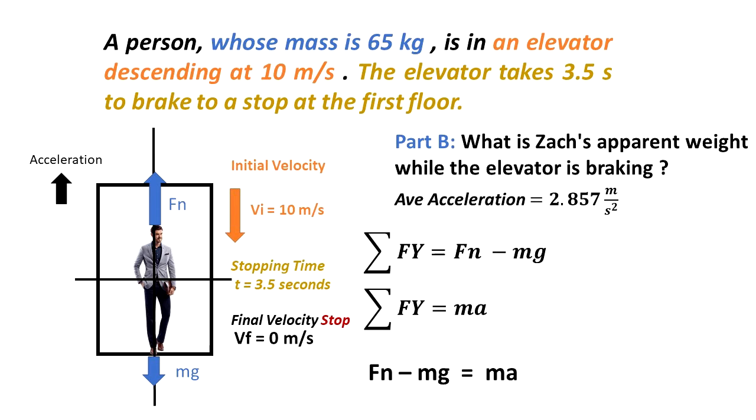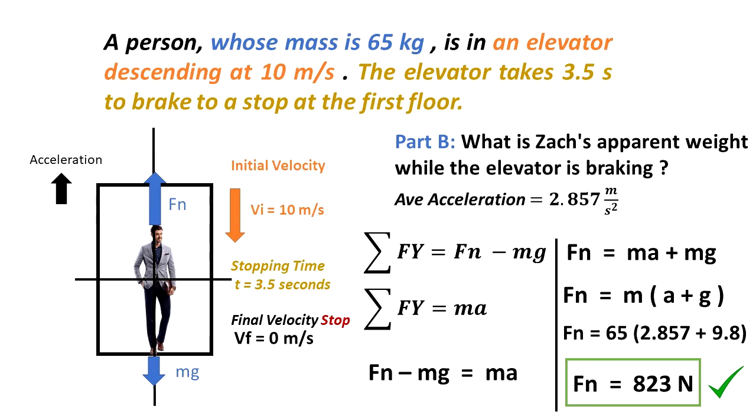So we have that Fn minus mg is equal to mass times acceleration. If I add mg to both sides, we get that Fn is equal to ma plus mg. Let's factor the mass: Fn is equal to mass times (a plus g). And when we compute the numbers, we get that Fn is equal to 823 newtons.